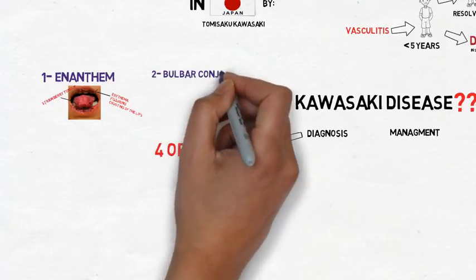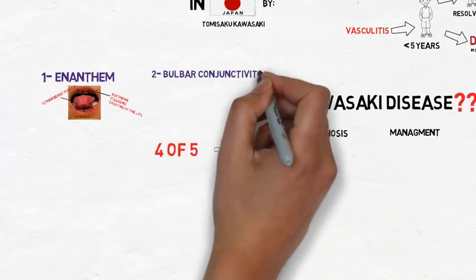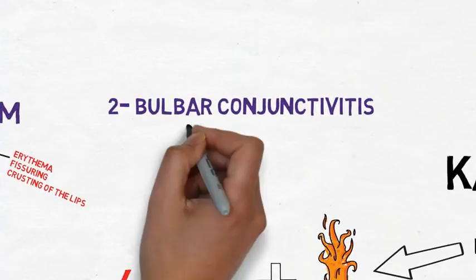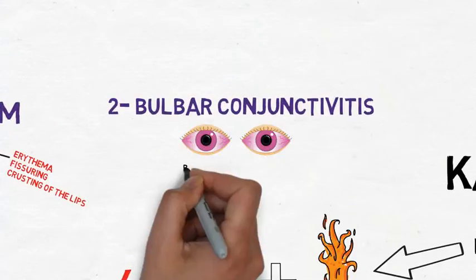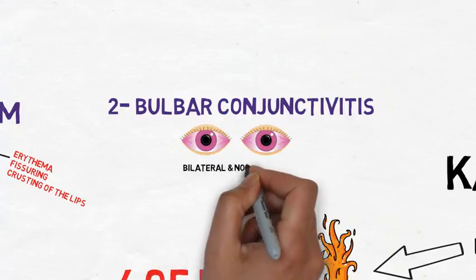Second is bulbar conjunctivitis. In Kawasaki, the conjunctivitis is mainly bilateral and non-exudative.